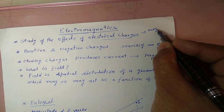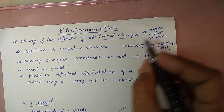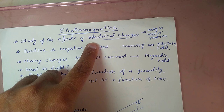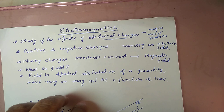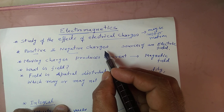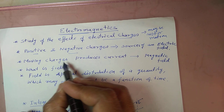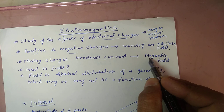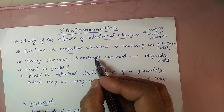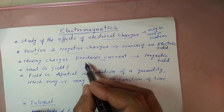These electric charges may be at rest or in motion. We know that charges are either positive or negative, and these charges are the source of the electric field. When the charges are moving, they produce a current, and this current will give rise to a magnetic field. So this is regarding the case when charges are in motion.